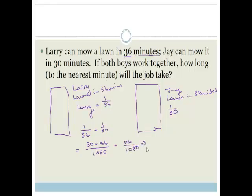And then what we need to do is we need to flip it. So we go 1,080 divided by 66 is going to be 16.36 minutes.